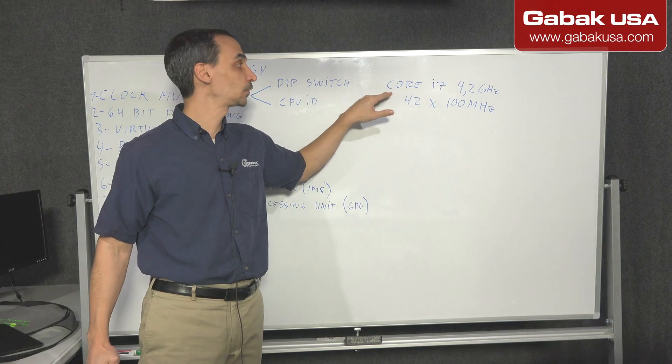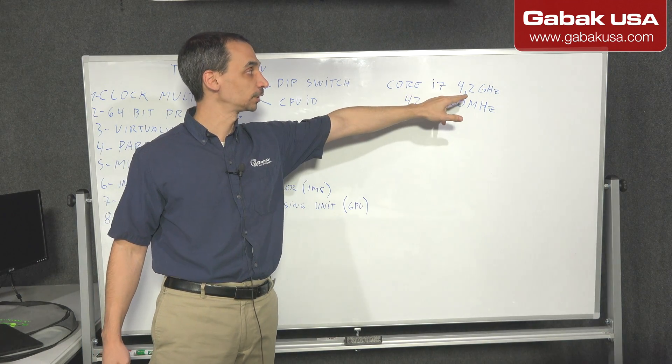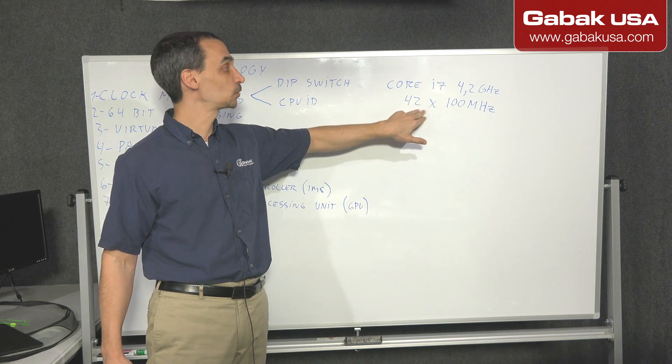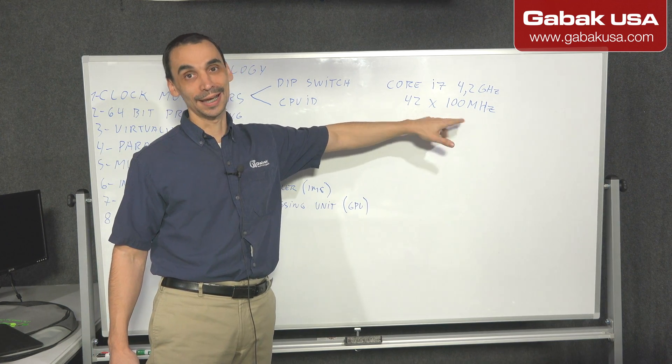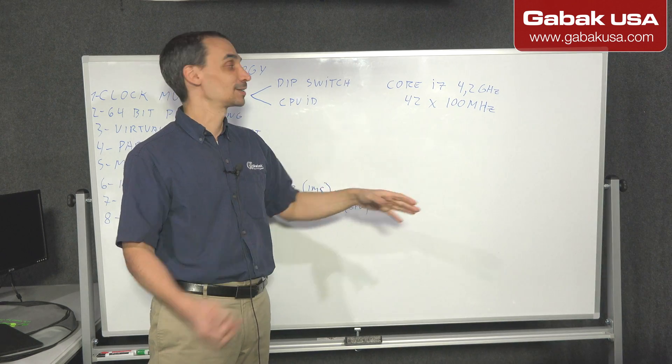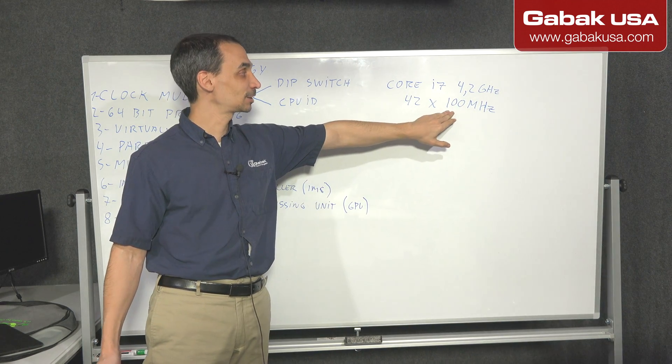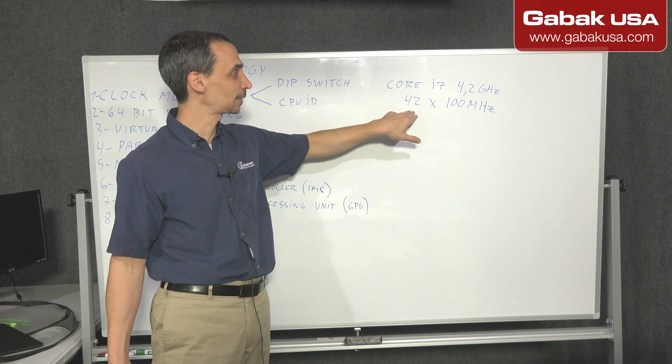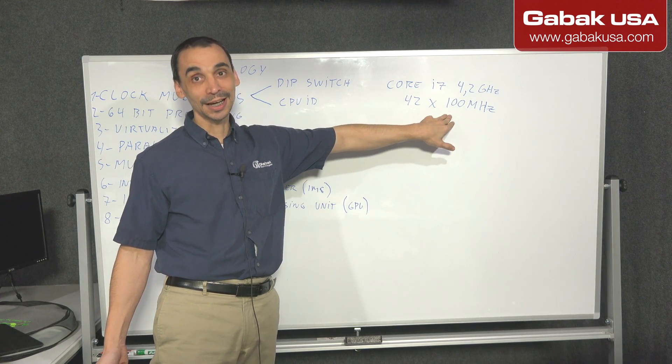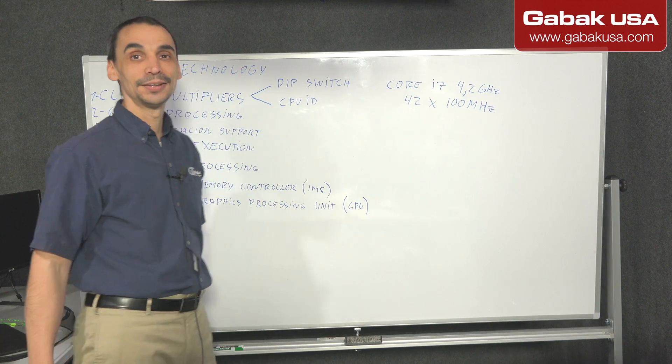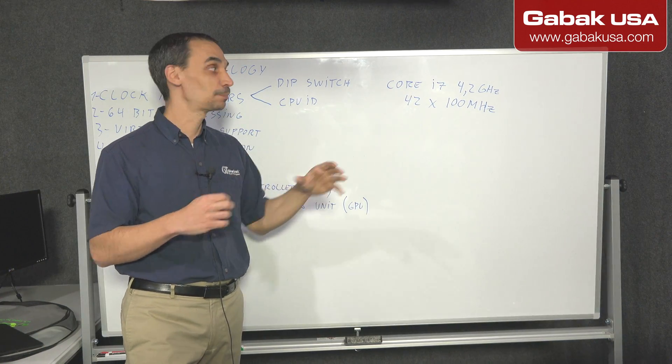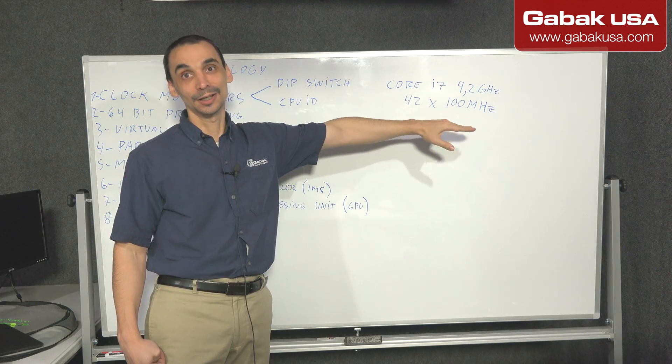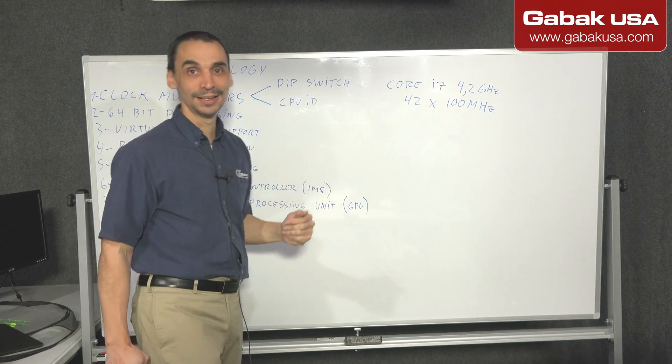In this case, we have a Core i7, the 4.2 GHz. And you will see, the multiplier, it will be 42. And this will be the speed of the bus, of the data bus. In this case, it will be 100 MHz. I'm going to leave a picture here. If you multiply 42 times 100, you will have that speed. That is the internal speed. But when you start transmitting data, it will be at 100 MHz. That is the main thing.